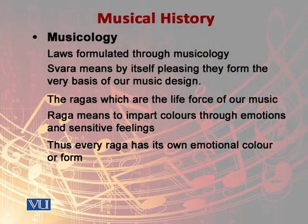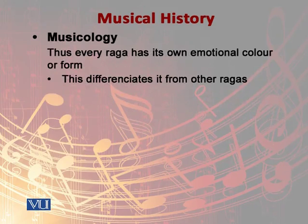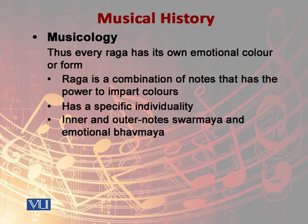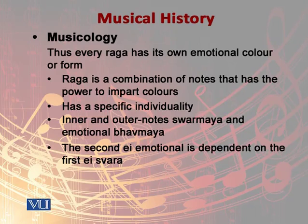Every Raag has its own emotional color, because of particular notes, a particular rhythm, or a particular mood. That differentiates one Raag from another — it is a creation of permutation and combination. Music has two components: one is the inner and the other is the outer. The inner is the notes — the combination of notes applied in a particular Raag. The outer is the emotional aspect, which is dependent on the Sur: what notes, what Sur are being used.